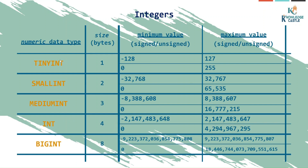Integer is also split into five further categories: tinyint, smallint, mediumint, int, and bigint — again because of different sizes. If you store something as tinyint, it takes only one byte. The range is either minus 128 to positive 127, or 0 to 255. If you know your number will be less than 255, you should use tinyint instead of integer, which takes 4 bytes per row.